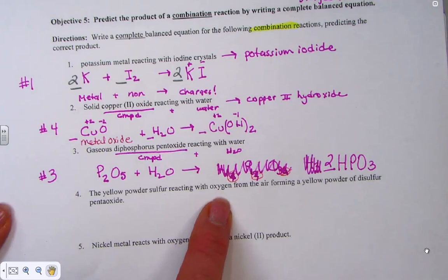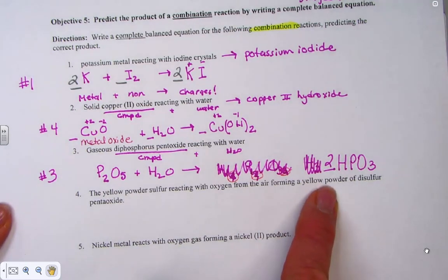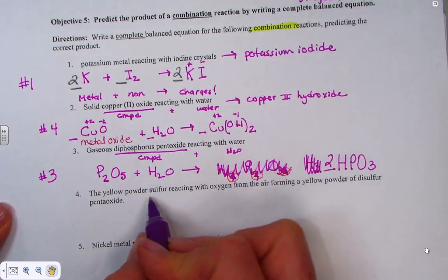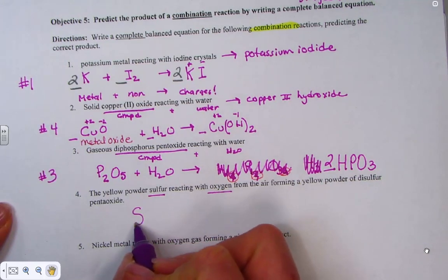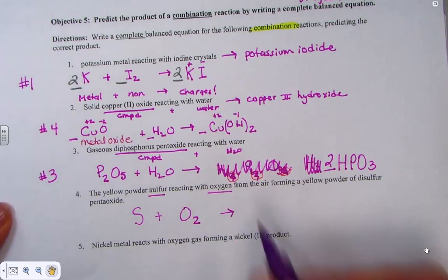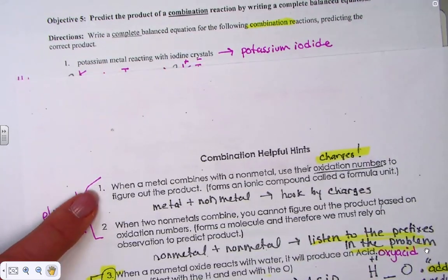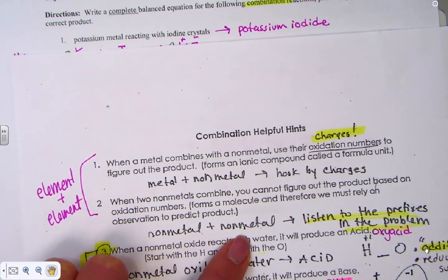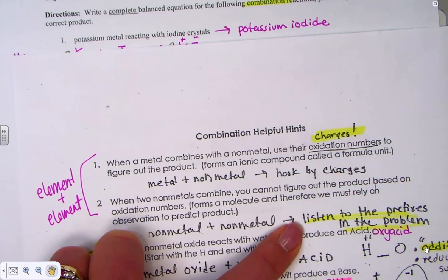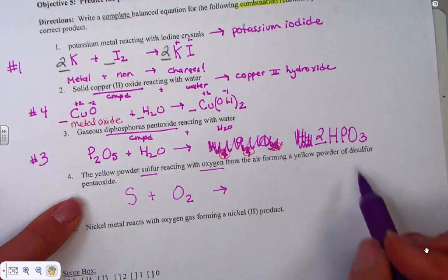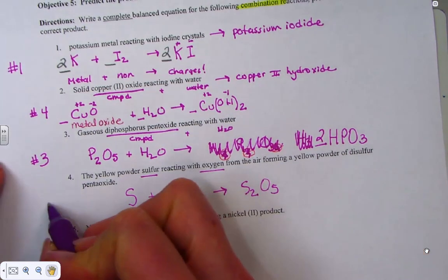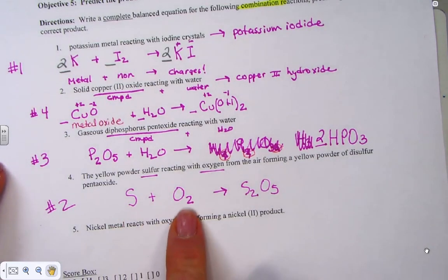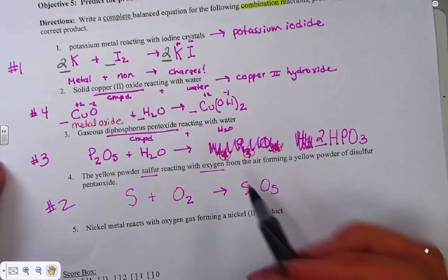The yellow powder of sulfur reacts with oxygen from the air. It's forming a yellow powder of disulfur pentoxide. We have an element plus an element. The elemental form of sulfur, combining with the elemental form of oxygen. Element plus element. Am I looking at helpful hint 1 or helpful hint 2? Helpful hint 2 describes when two non-metals hook together, it's very difficult to predict the product. And unless you're running the experiment, it's incredibly difficult. At our level, we will be told the problem. By listening to the prefixes, we can deduce the product. Disulfur pentoxide. Helpful hint 2 describes when a non-metal combines with a non-metal, listen to the prefixes.